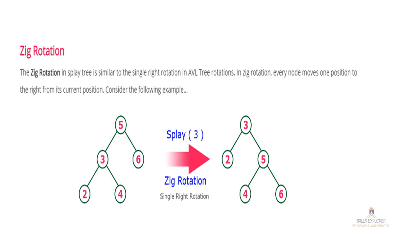Consider the following example: you have nodes 5, 3, 6, 2, 4. You need to splay node 3. Node 3 is the left child of its parent 5. Since it is the left child, you move the parent to the right side — opposite direction. So you rotate 5 to the right. After applying Zig rotation, 3 becomes the parent and 5 becomes its right child. This is the Zig rotation, similar to what we discussed in AVL Trees.